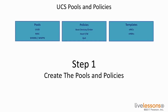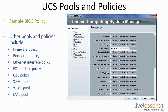The first step in using the stateless architecture in UCS is to configure pools and policies. Pools and policies include things like firmware policies, boot order policies. You can put the server hardware in a pool, put MAC addresses in a pool, or WWNs in a pool. You can also configure Ethernet interface policies or fiber channel interface policies.